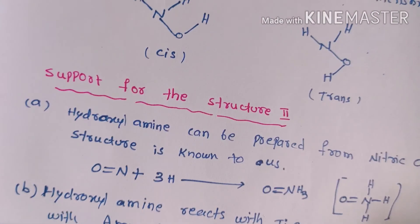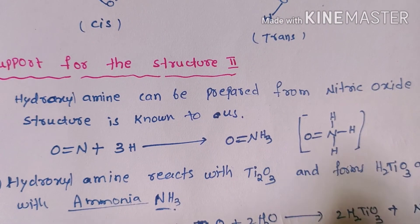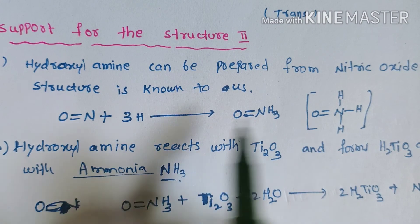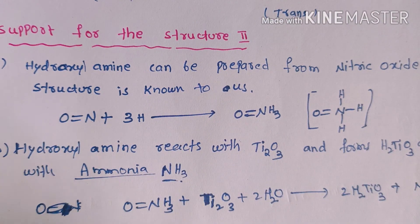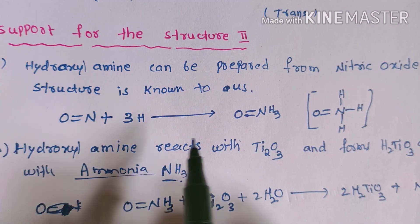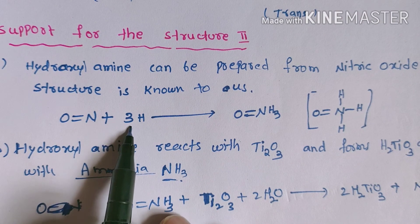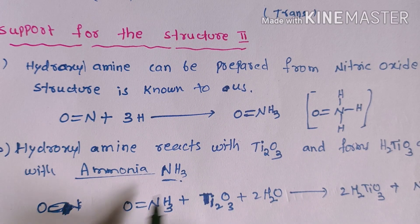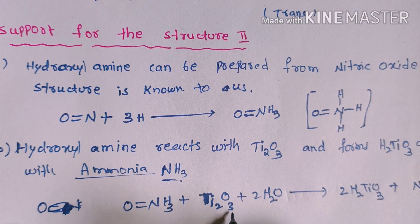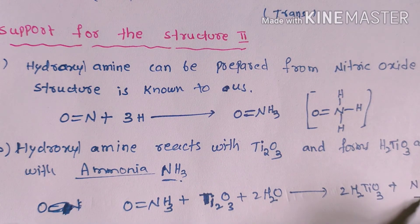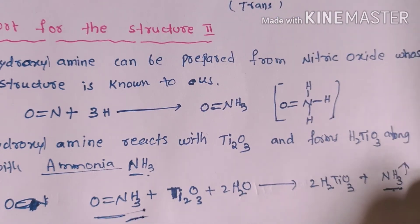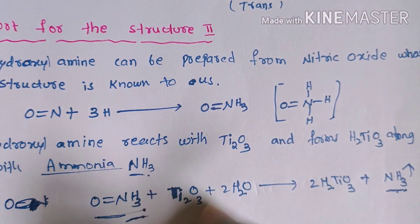Evidence for Structure 2: hydroxylamine can also be prepared by reducing nitric oxide (NO), whose structure is N=O. When nitric oxide reacts with hydrogen it forms O=NH₃, supporting Structure 2. Additionally, hydroxylamine reacts with titanium tetroxide to form H₂TiO₃ and gives ammonia. The ammonia present in this reaction is consistent with Structure 2. Therefore both reactions support the second structure of hydroxylamine.